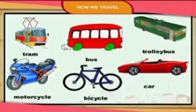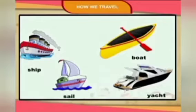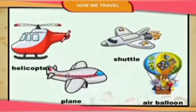Now see here children, different types of vehicles are there. These vehicles move on road and these vehicles move on water. Now see children, these vehicles move in air.